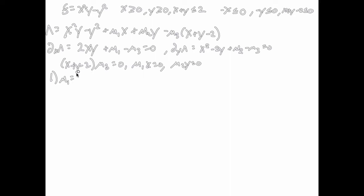Case 1: mu1 equals mu2 equals mu3 equals 0 — none of the constraints bind. Then equation 1 gives 2xy equals 0, implying x equals 0 or y equals 0. But we assumed none of the constraints bind, so x and y can't be zero. This is a contradiction. Case 1 is eliminated.